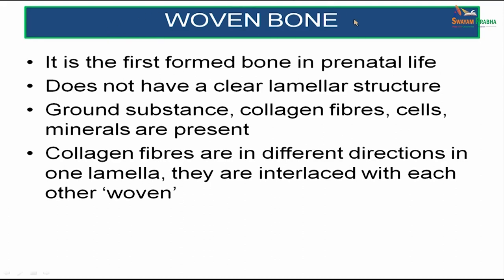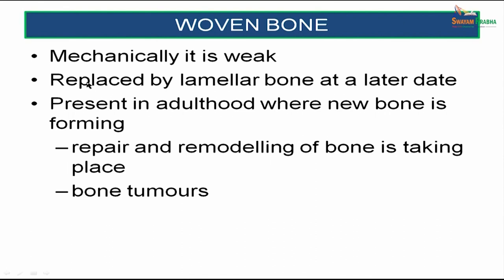Woven bone is the first formed bone in prenatal life. It does not have a clear lamellar structure and contains ground substance, collagen fibers, cells, and minerals. The collagen fibers run in different directions within one lamella and are interlacing — hence the name woven bone. It is mechanically weak and is later replaced by lamellar bone. In adulthood, woven bone is seen only during repair, remodeling, or in the presence of a bone tumor.